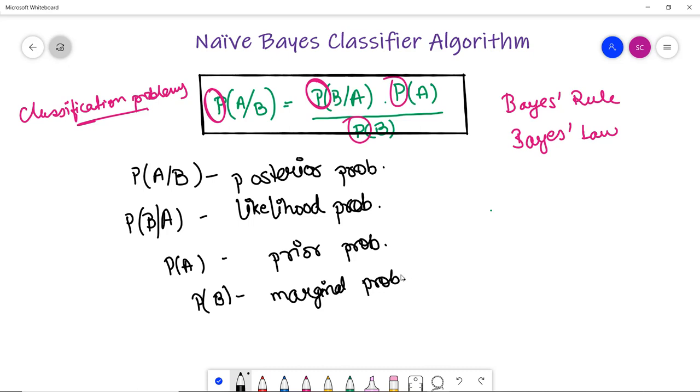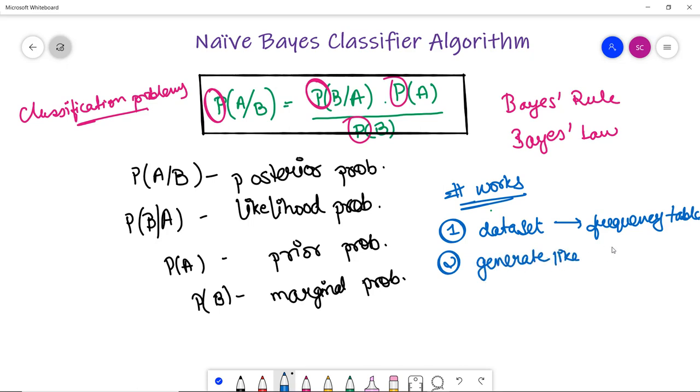Now how does this Naive Bayes classifier actually work? It works in a few simple steps. The first step is it converts the data set into a frequency table. The second step is to generate a likelihood table.